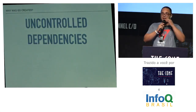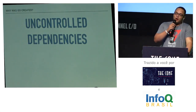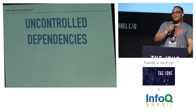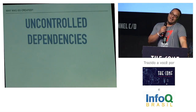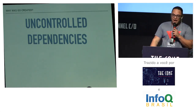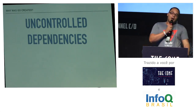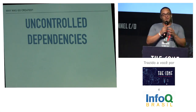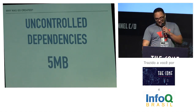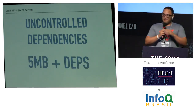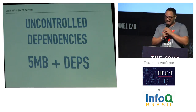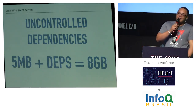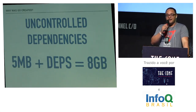Another problem is controlling dependencies. Sometimes we just require gems on our projects, or import packages in Python, and we need to be careful. There was a case at Google where a large program with 2,000 files had a combined source size of 5 megabytes — but when the dependencies were included, the size increased to 8 gigabytes. That makes things much harder for the compiler.